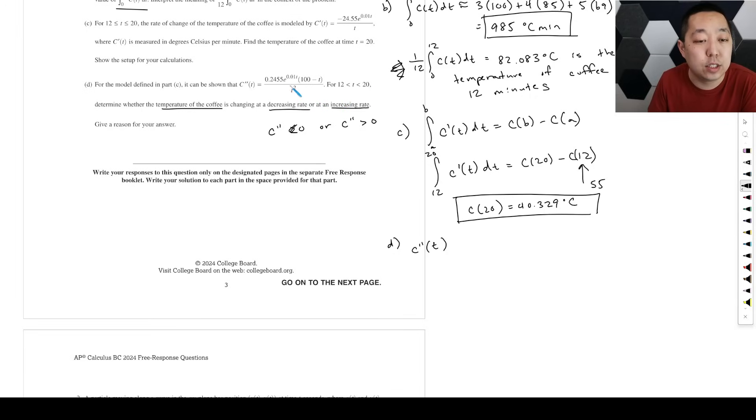For D, C double prime of T—if you look at this, it's always positive here. This is positive, 100 minus T is always positive, is greater than zero. So it is at an increasing rate. The way you want to interpret that is that the temperature of coffee is decreasing itself, but that rate, that amount that is decreasing by, is decreasing less and less and less. So that's why it is at an increasing rate, and that's as long as you justify that the second derivative is positive for the reason there.